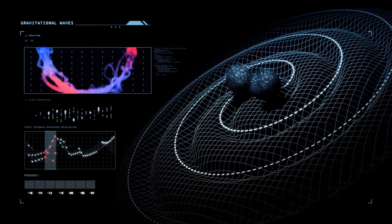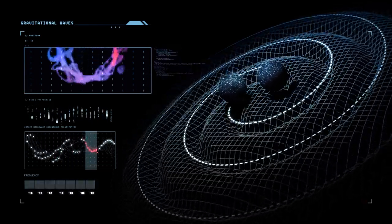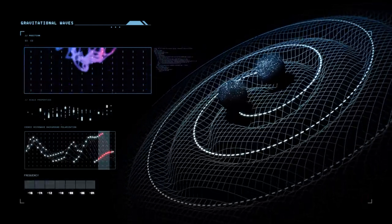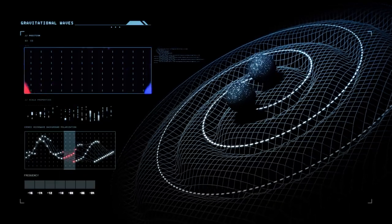According to scientists, ripples in spacetime, known as gravitational waves, can alter these signals as they move through space.